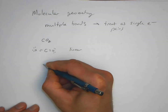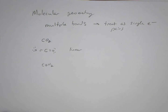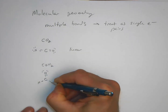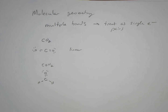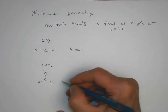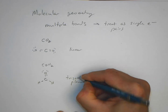Let's try another example. You can take a second, pause the video, and try to get the best Lewis structure. What you should get as the best Lewis structure would look like this. What we have here is a central atom with three places we're putting electrons around the central atom, and so in this case we would have a trigonal planar molecule.